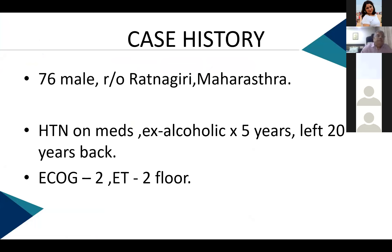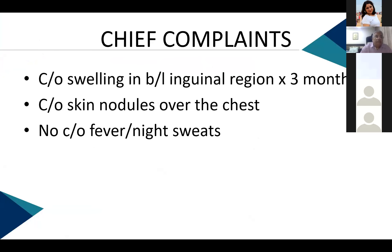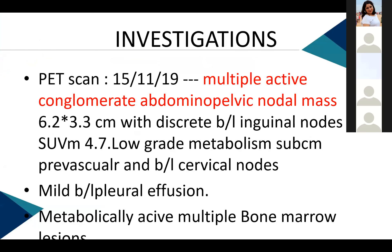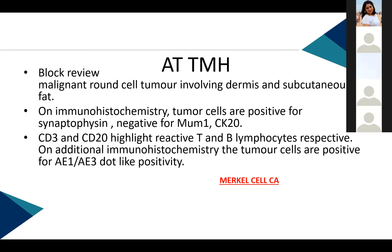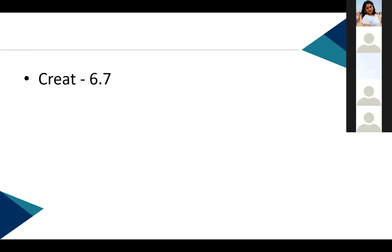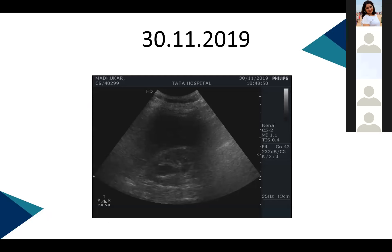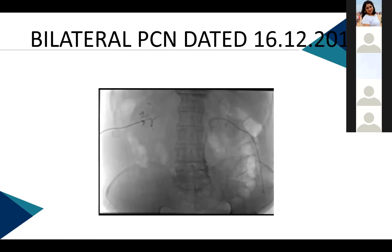PET-CT showed multiple nodes with SUV 4.7 and low-grade metabolism in the prevascular region, with nodes in prevascular and bilateral cervical regions. Biopsy from the inguinal nodes revealed Merkel cell carcinoma with metastatic nodes in the mediastinum. Creatinine was 6.7. Ultrasound showed bilateral hydronephrosis due to retroperitoneal nodes compressing the ureters. The patient was referred for emergency bilateral PCN placement, which was uneventful.